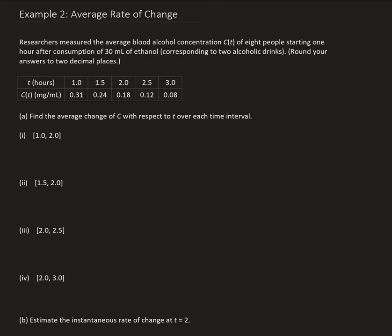In this example we are given some data where the first row corresponds to the time in terms of hours, and the second row is the average blood alcohol concentration for eight people, starting after one hour of consumption of 30 milliliters of ethanol. What we want to do in the first part is find the average change of C with respect to T over each of the following time intervals.